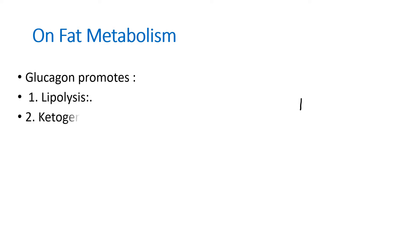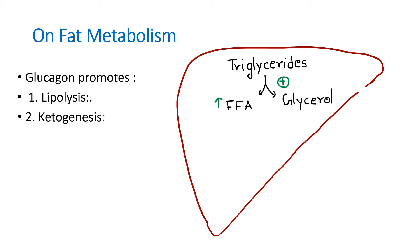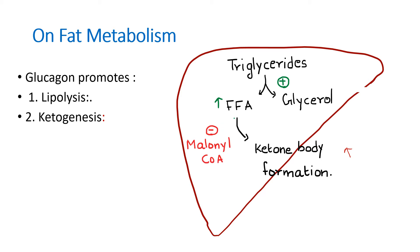Next, the effect on fat metabolism, where the site of action is also the liver. Glucagon promotes lipolysis as well as ketogenesis. It increases the conversion of triglycerides to free fatty acids and glycerol, and free fatty acids are converted into ketone bodies, so increased lipolysis leads to increased ketone body formation. Additionally, malonyl-CoA normally inhibits the conversion of free fatty acids into ketone bodies, but glucagon decreases the level of malonyl-CoA, resulting in even more ketone body formation.